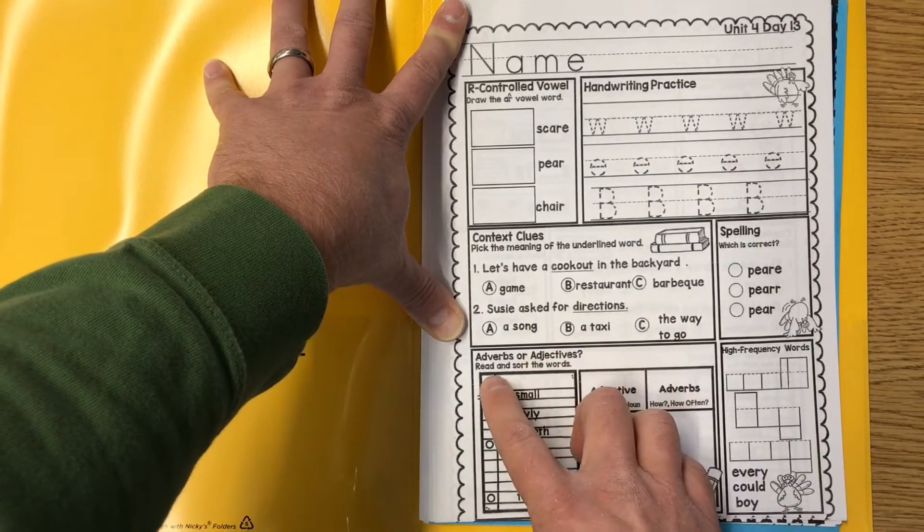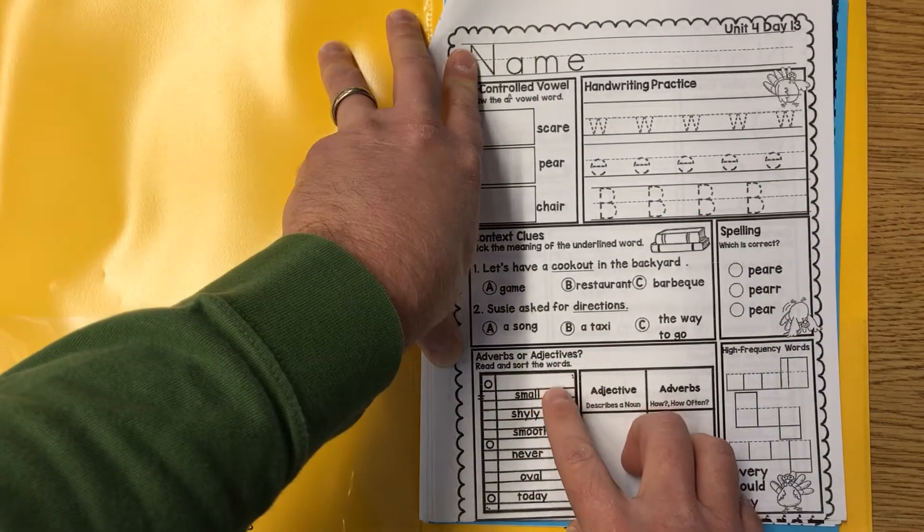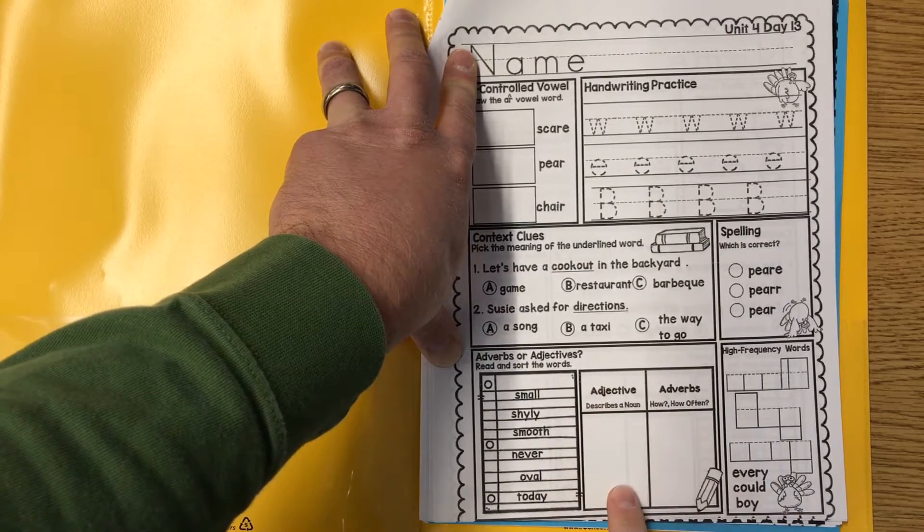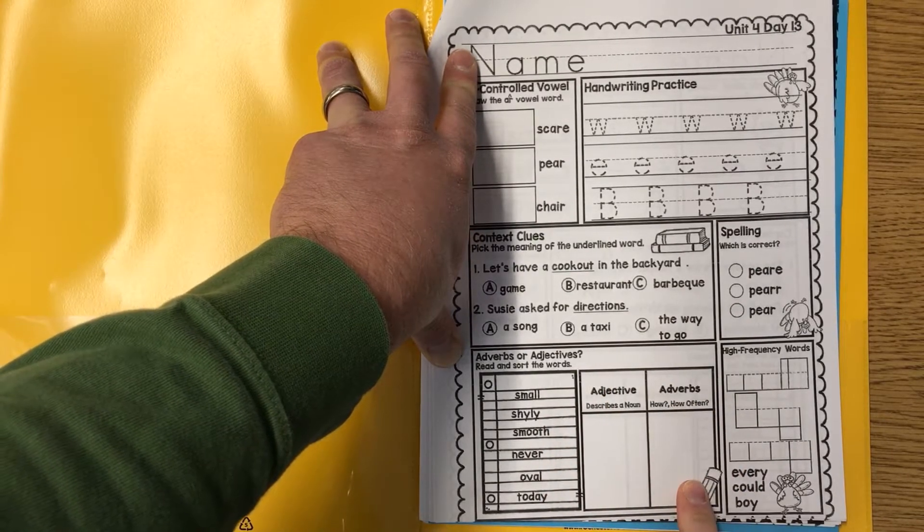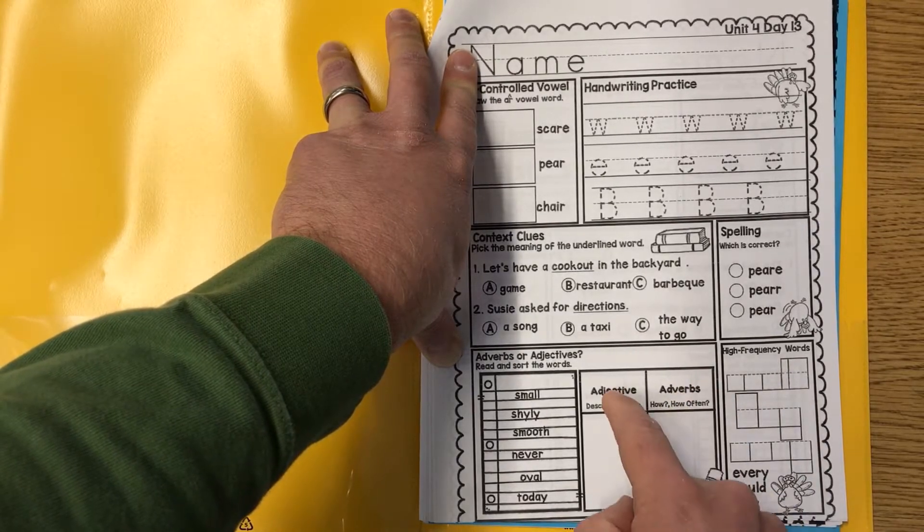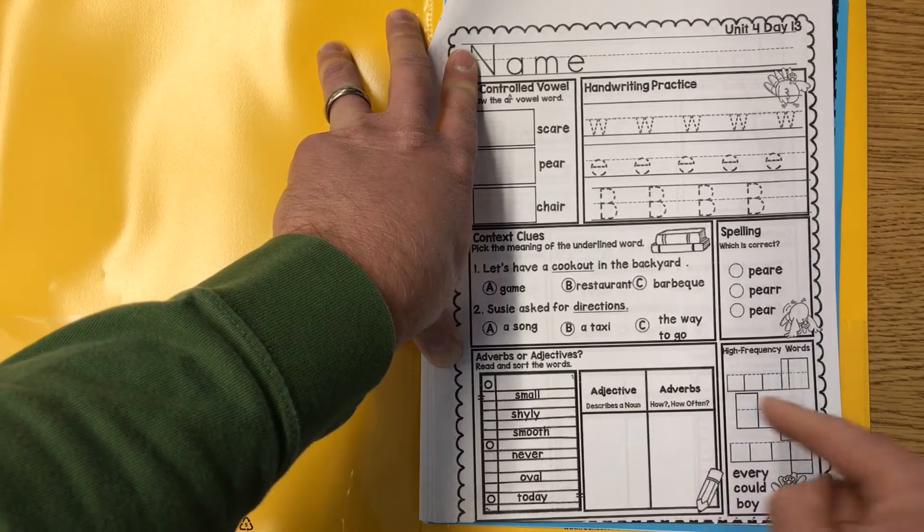Adverbs or adjectives, read and sort the words. We got small, shyly, smooth, never, oval or today. Adjectives here, adverbs here. A lot of times adverbs have an LY attachment, but not always. Remember adjectives describe something comes after it typically.